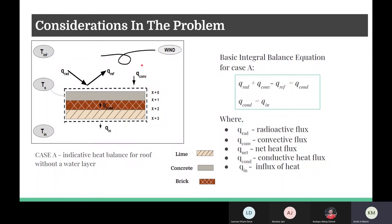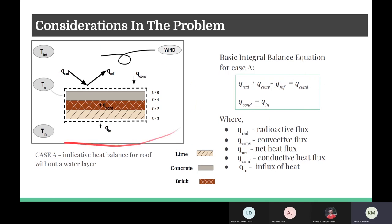There is convection between the moving wind — considered to have a velocity of 10.32 kilometers per hour, which is an average velocity in hot and dry climate — and the upper layer of the roof, and then conduction within the roof layers and the inner room air. The integral balance is: q_radiation + q_convection − q_reflection = q_conductive = q_in. Eliminating q_conductive, we get: q_radiative + q_convective − q_reflective = q_in.